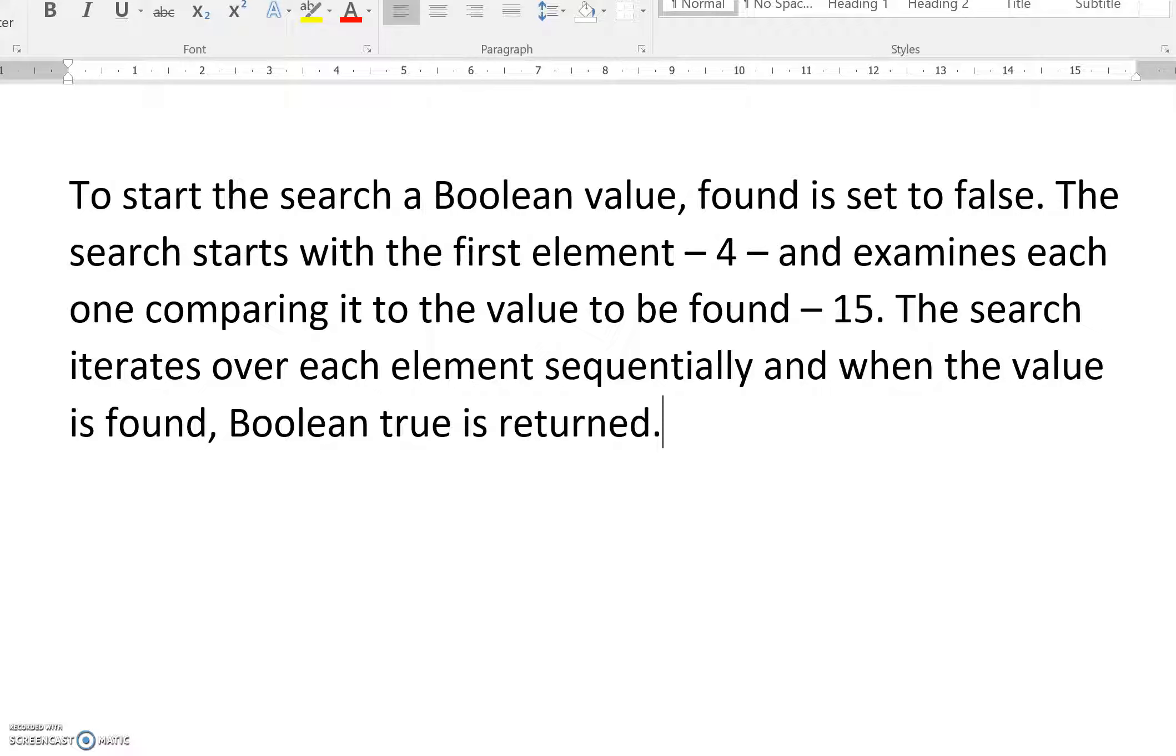I reckon that is four marks - that explains it and uses the correct terminology like sequentially, like boolean value found is true or false, and iterating. Each number in that list is an element and you need to refer to that in your answer. I hope that helps - I've typed it up there so you can read it a bit more clearly.